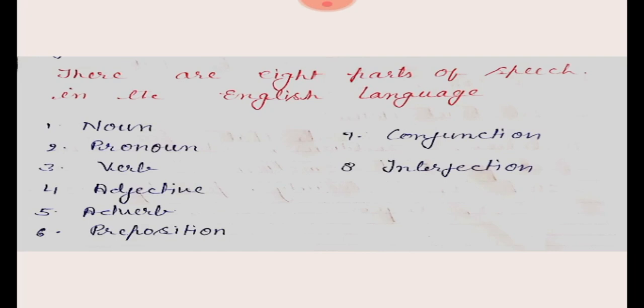You have learned this in former classes also. I want to give a quick introduction about parts of speech. First, we will take noun. Noun is the name of a person, place, or thing. Examples: Ram, India, table.